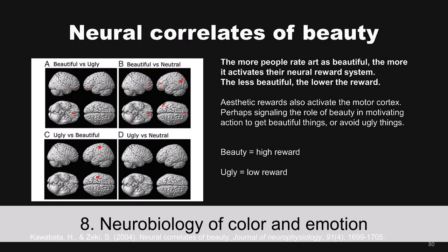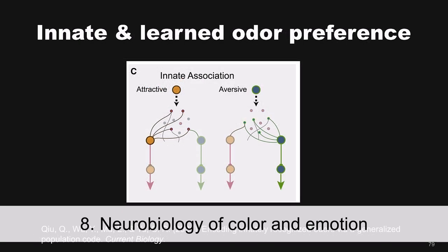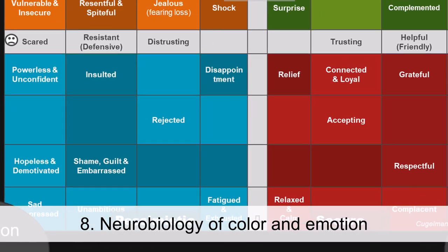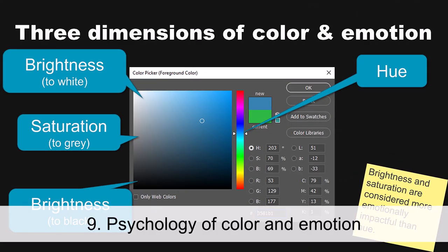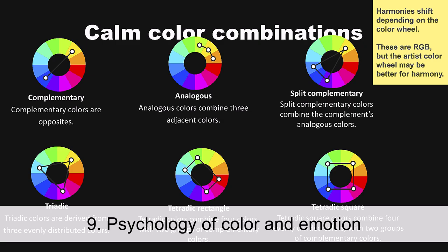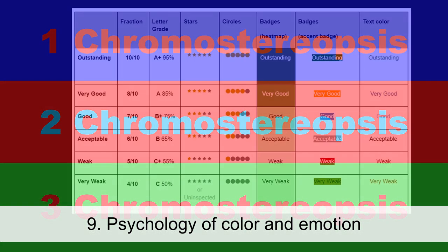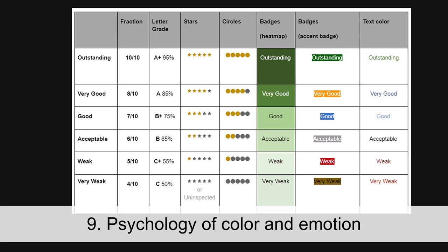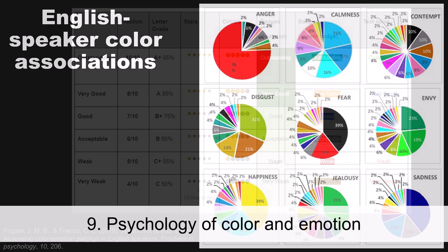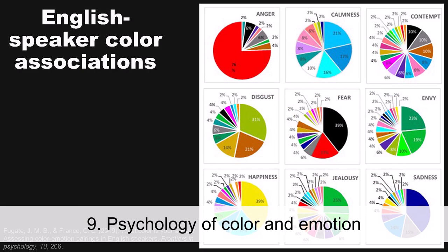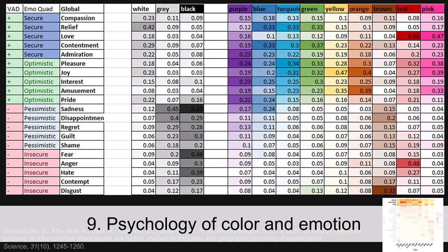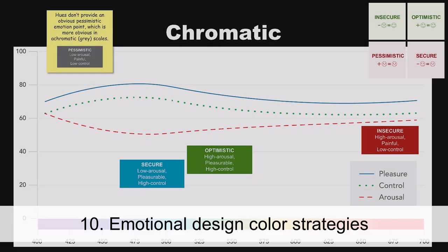In the first class on color and emotion, we're going to get into the neurobiology of what emotions are and how they work. In module nine, we're going to get more into the psychology of color from a more correlational perspective. This is where we're going to find the magic lookup lists of color and emotions, and there's quite a lot of scientific research we can draw from — so there's no need to go to the nonsense pseudoscience sources that people typically use.